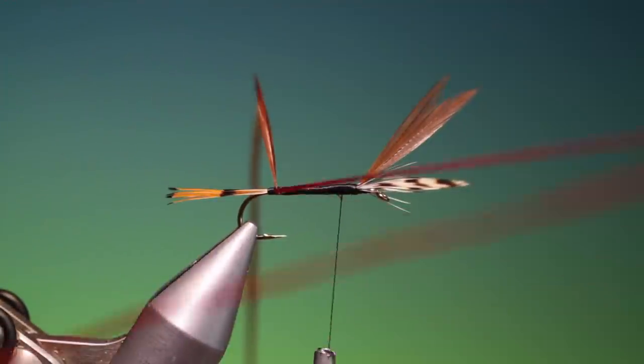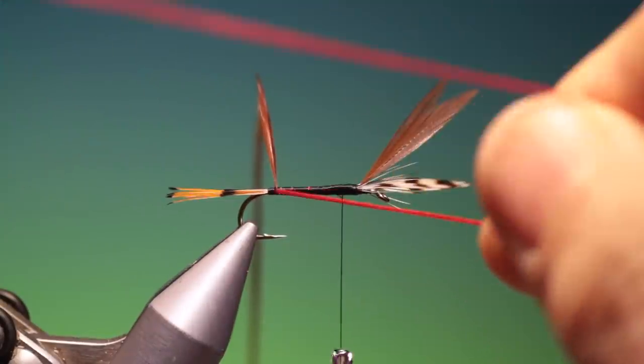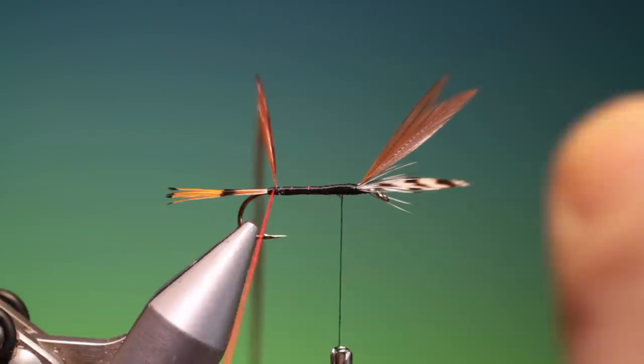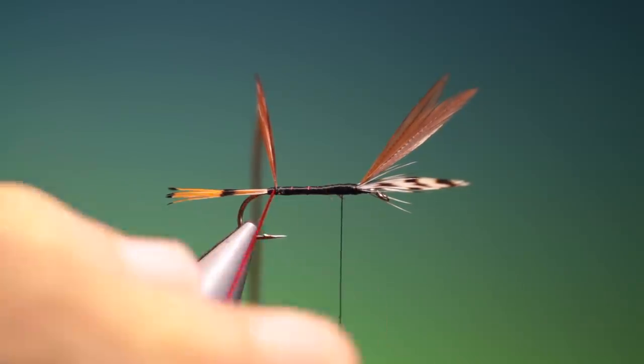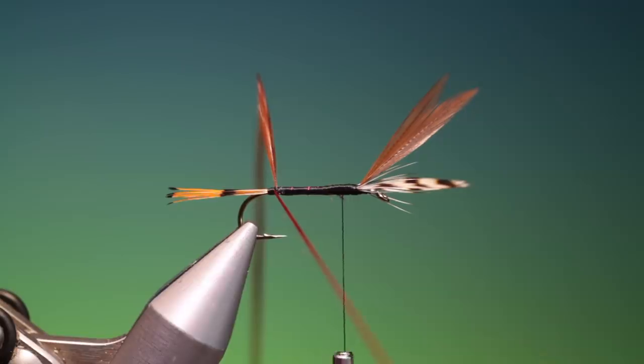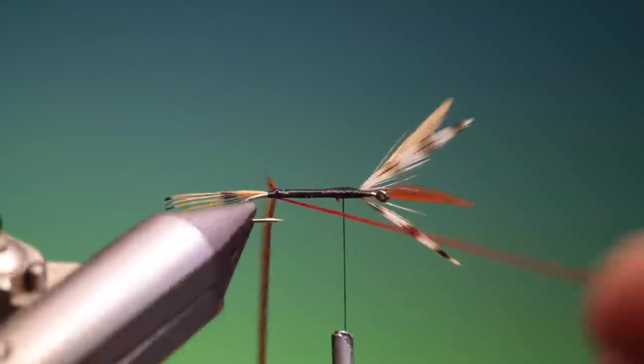There we are. Now we take our floss. If you pull your floss very gently between your finger and thumb, just to flatten it out, you get a much better result. So I'll just use the vise to take that first turn.